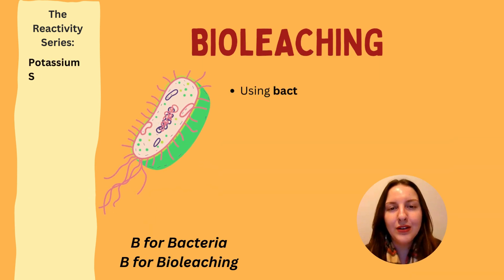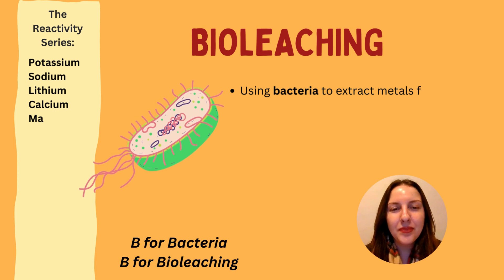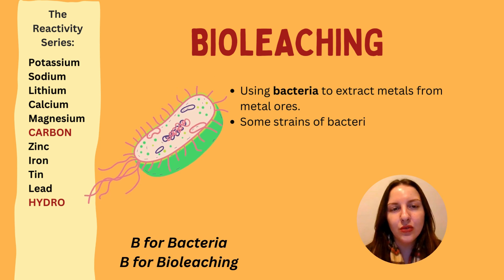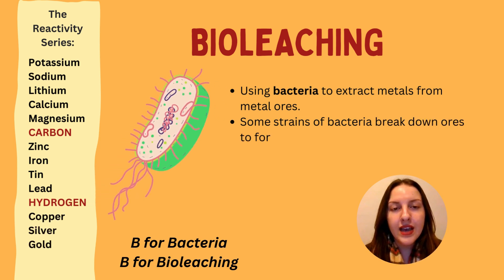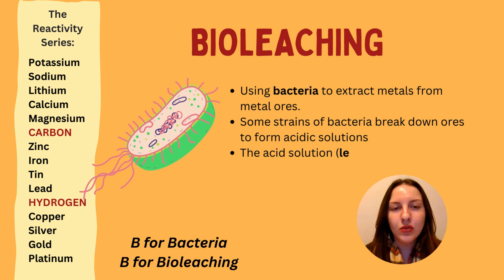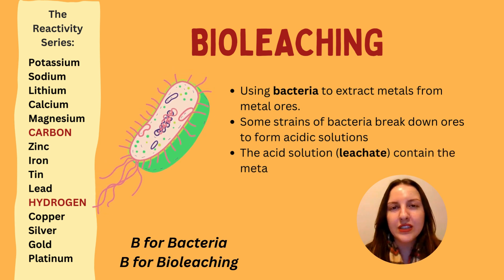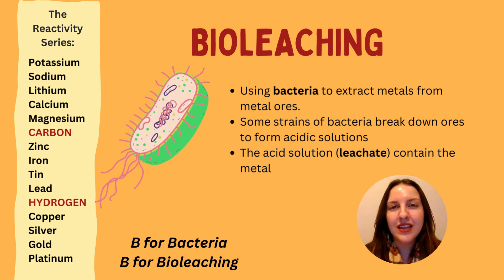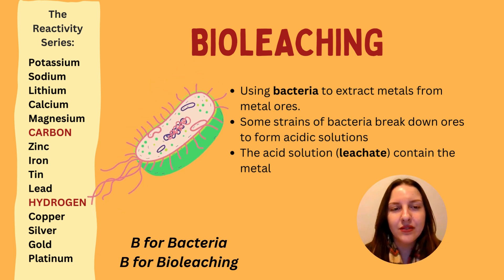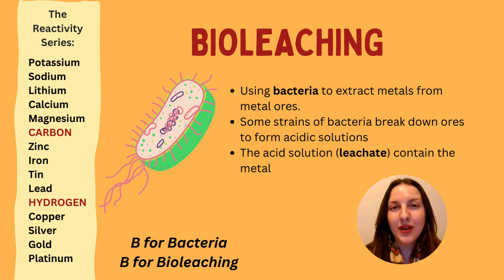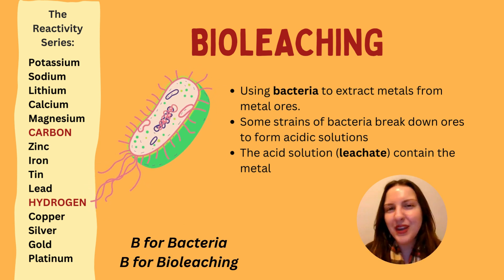The next biological process is called bioleaching — B for bacteria, B for bioleaching. It's a similar idea: we are using bacteria, another biological organism, to extract metals from their ores. Some bacteria have the ability to break down metal ores and form acidic solutions. Certain strains of bacteria are very fascinating organisms. The acidic solution — the leachate — that forms contains the metal, and we can actually use this. That is one of the more obscure methods of extracting metals, but something you need to know for higher tier content.